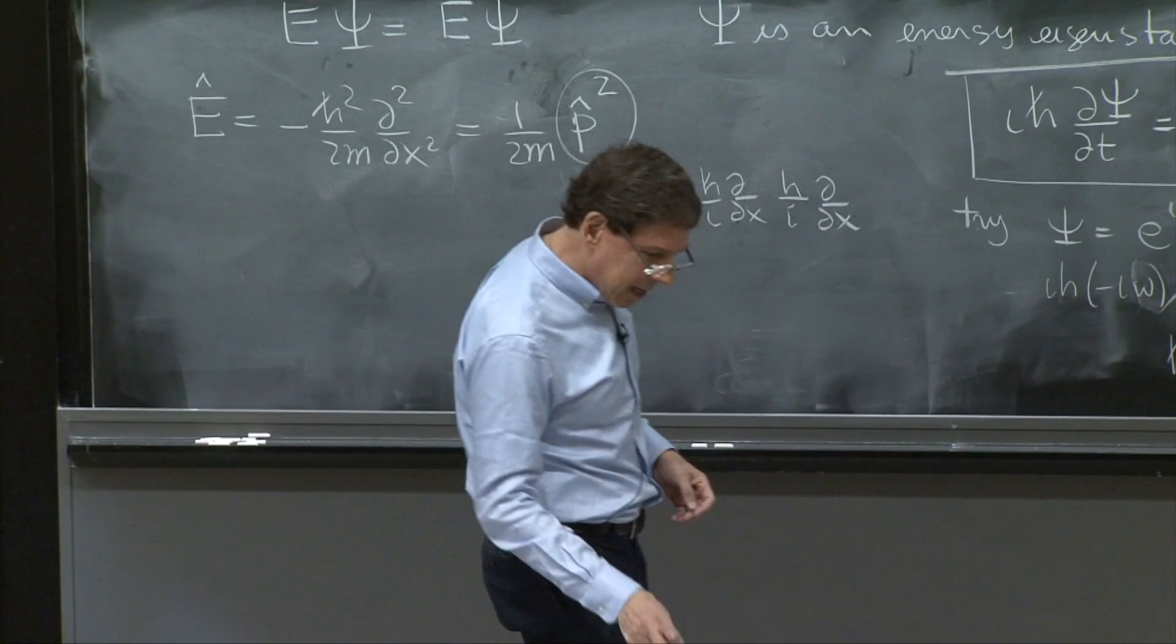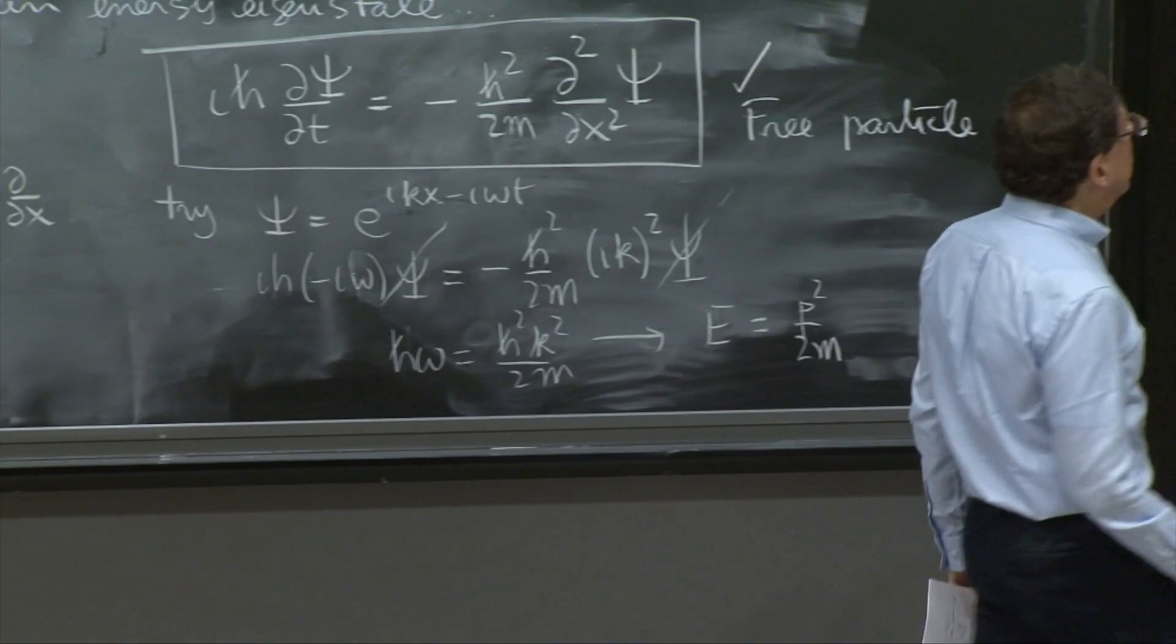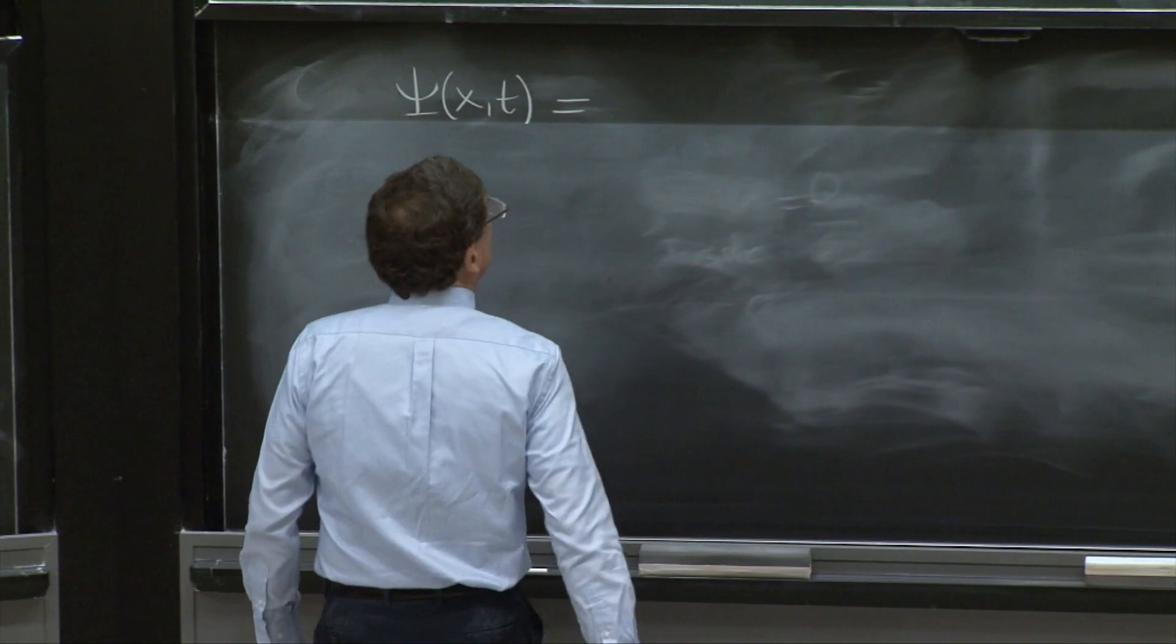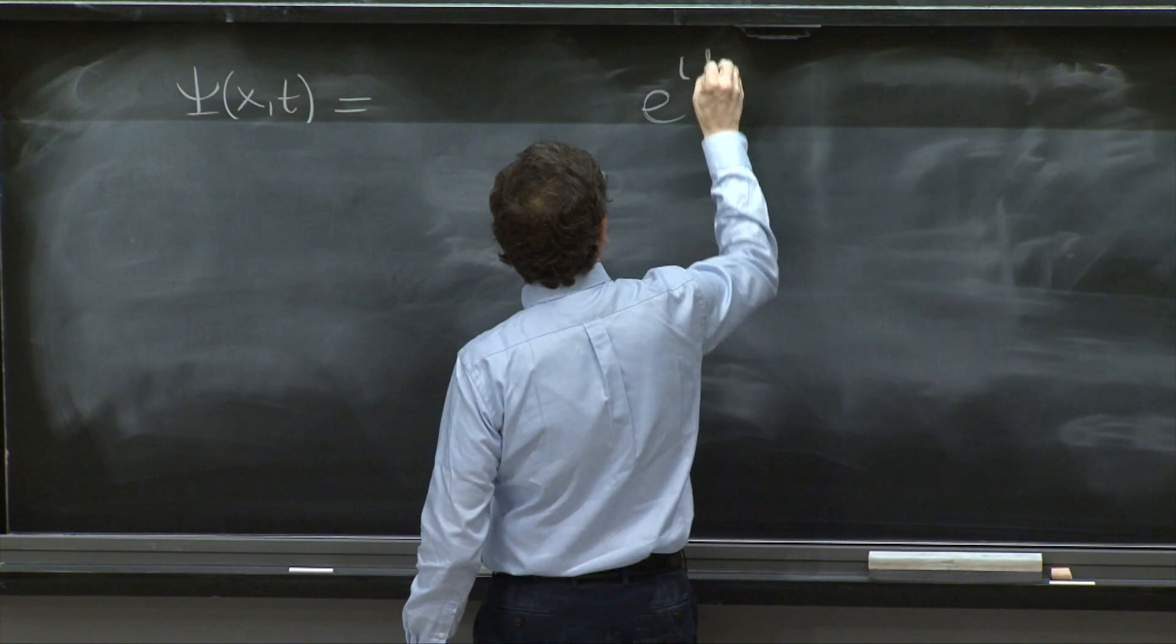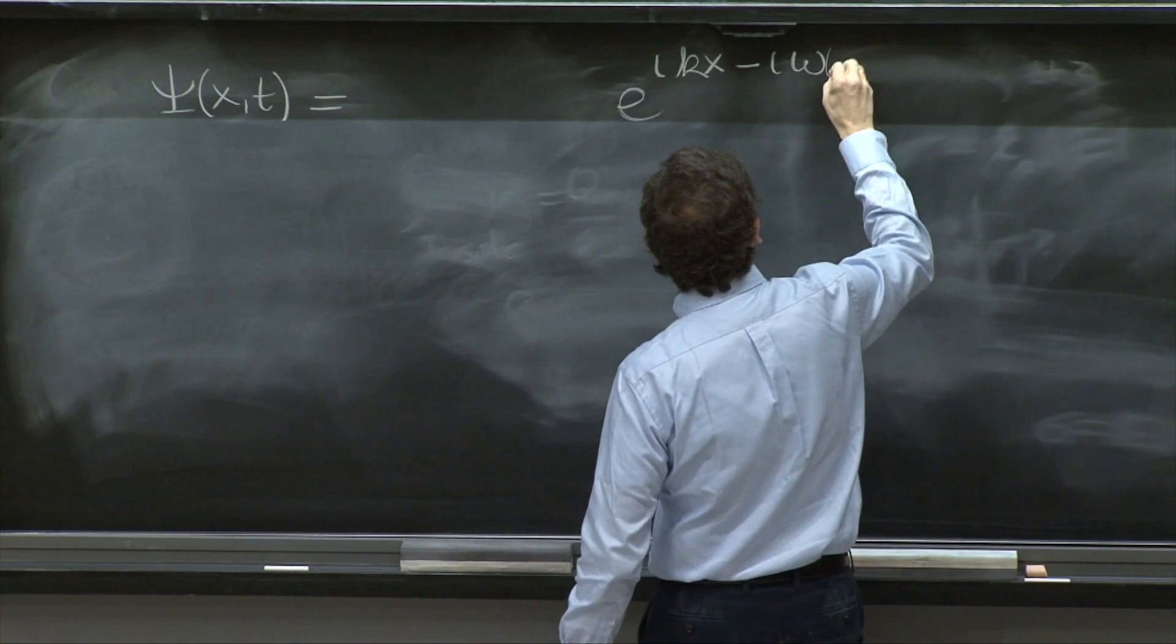and the general solution of this equation would be a psi of x and t, which would be a superposition of those waves. So you would put an e to the i kx minus i omega t. I'll put omega of k,